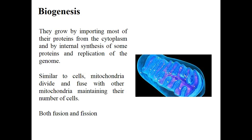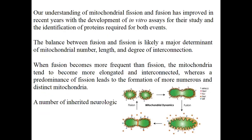Similar to cells, mitochondria divide and fuse with one another. If two mitochondria fuse with each other to make one healthy mitochondrion, this is called fusion. If one mitochondrion divides into two, this is called fission. Our understanding of mitochondrial fusion and fission has improved with the development of in vitro assays and the identification of proteins required for both events.